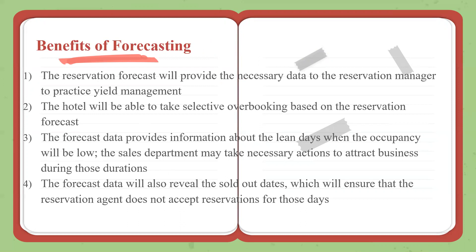A quick recap of the benefits. This is very important data for a revenue manager to practice revenue management or yield management. We can take selective overbooking based on forecast. We know what are the lean days, what are the valley dates, which are really low, and you need to push sales.